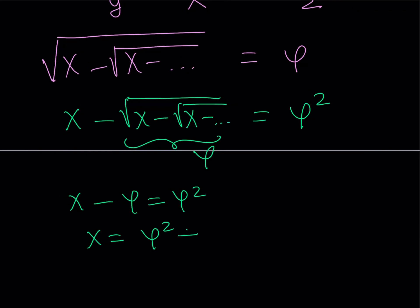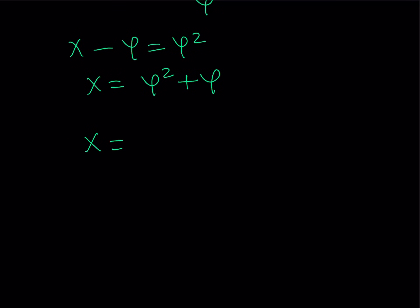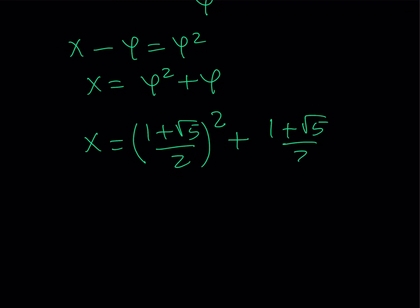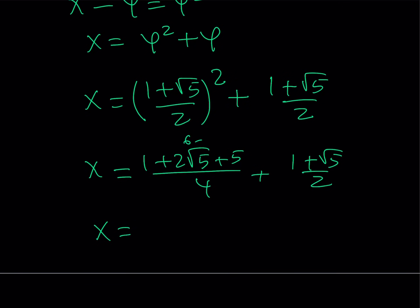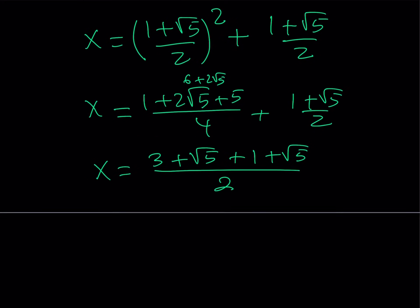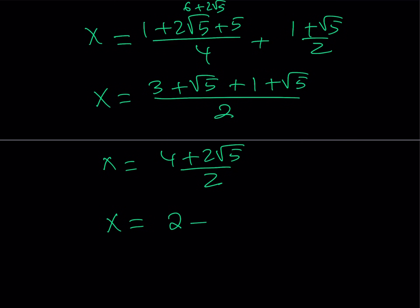From that we get x equals phi squared plus phi. Replacing phi with 1 plus root 5 over 2: we compute (1 plus root 5 over 2) squared, which gives 1 plus 2 root 5 plus 5 over 4, simplifying to 6 plus 2 root 5 over 4, which is 3 plus root 5 over 2. Adding 1 plus root 5 over 2, we get 4 plus 2 root 5 over 2, which simplifies to 2 plus root 5. So x equals 2 plus root 5.